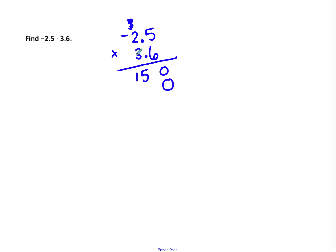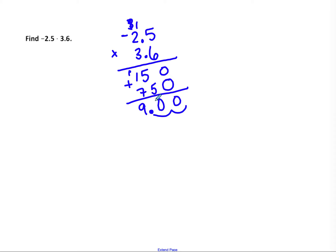Multiplying as if it were 25 times 36: 6 times 5 is 30 — write 0, carry 3. 6 times 2 is 12, plus 3 is 15. Add a 0 placeholder, then 3 times 5 is 15 — write 5, carry 1. 3 times 2 is 6, plus 1 is 7. Adding: 0 plus 0 is 0; 5 plus 5 is 10 — write 0, carry 1; 1 plus 1 is 2, plus 7 is 9. I have 2 decimals in the problem, so 2 decimals in the answer. Different signs, so the answer is negative: negative 9 and 0 hundredths, or simply negative 9.